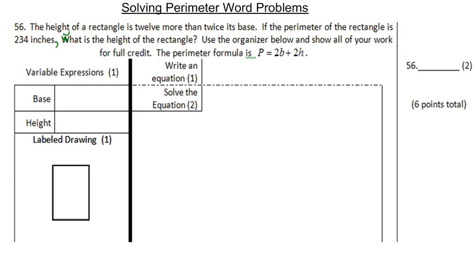Let's read again and try and actively read it. It says the height of the rectangle is, well, that should be a hint that we're telling you the height. So that means the base will probably be the thing we don't know. 12 more than twice its base. I don't know what the base is. So, if the perimeter of the rectangle is 234 inches, what's the height of the rectangle?